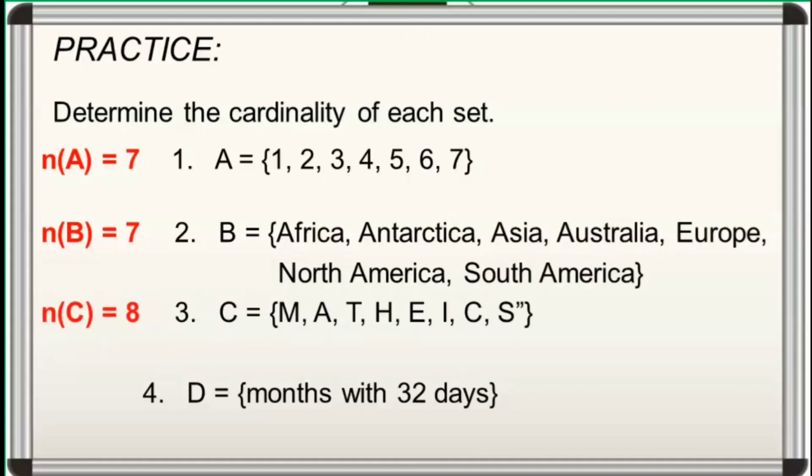And for number 4, set D is the set of months with 32 days. We have no elements for this set since a month has a maximum of 31 days. So, N of D is equal to 0.